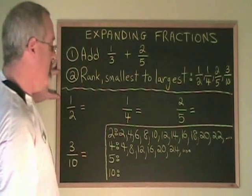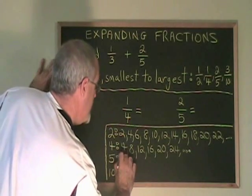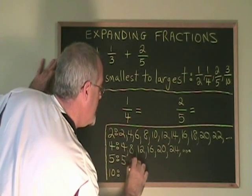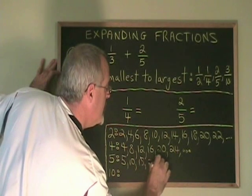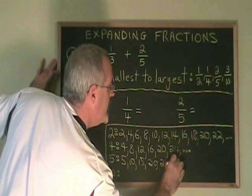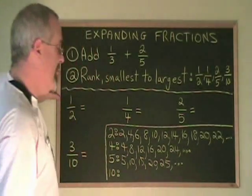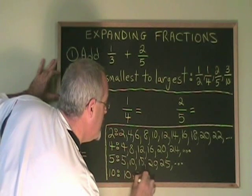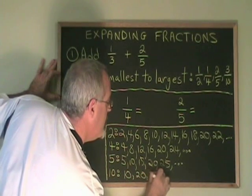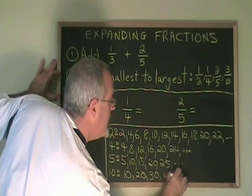The multiples of 5: 5, 10, 15, 20, 25, and so on. And the multiples of 10: 10, 20, 30, 40, and so on.